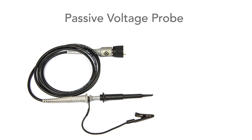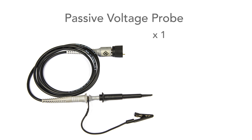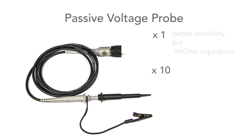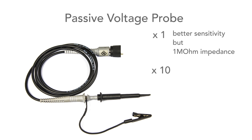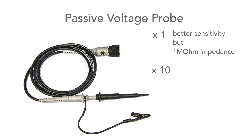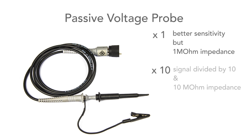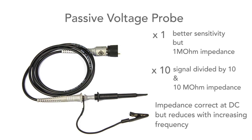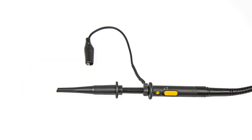The passive voltage probe comes in two main varieties: a times 1 and a times 10. The times 1 gives you better sensitivity but a 1 megaohm input impedance, while the times 10 gives you a 10 megaohm input impedance but reduces the signal by a factor of 10. Often a single probe may be switchable between times 1 and times 10, letting you choose between sensitivity and loading the circuit.